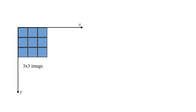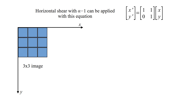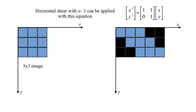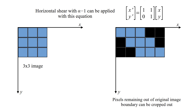This is a 3 by 3 image, and this is the equation to apply horizontal shear with alpha equal to 1. This is the transformed image. Pixels remaining outside the original image boundary can be cropped out.